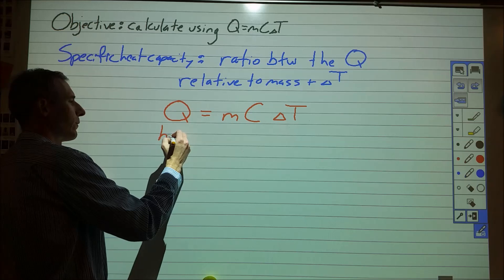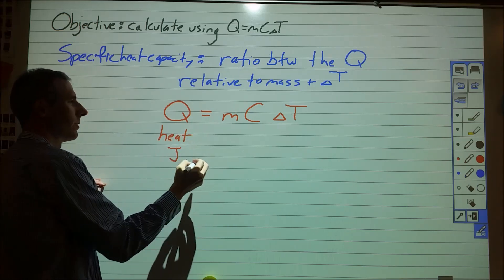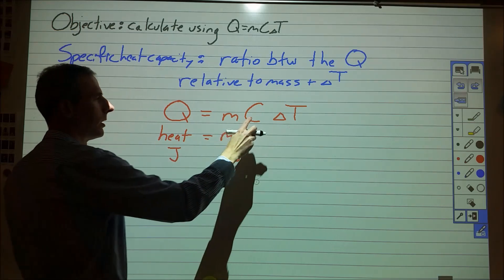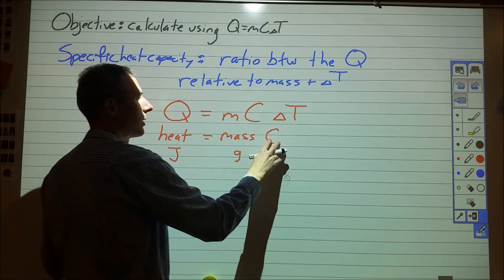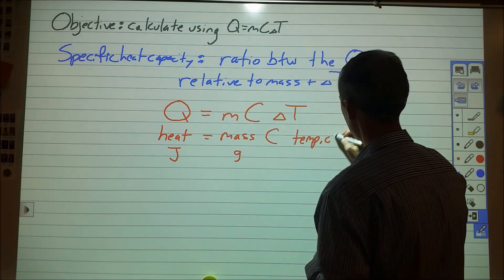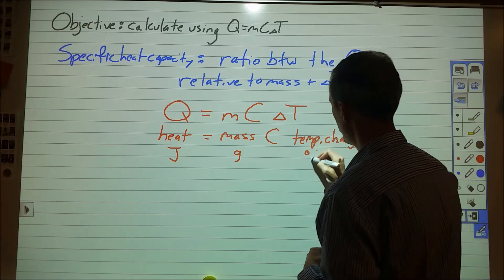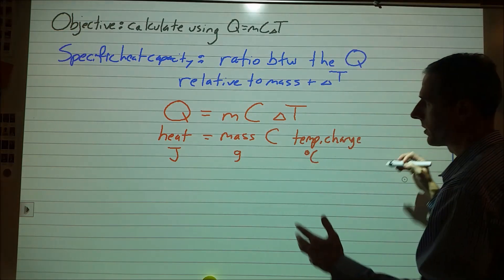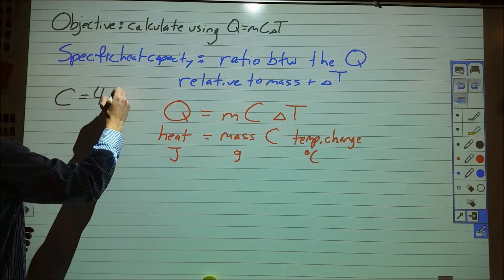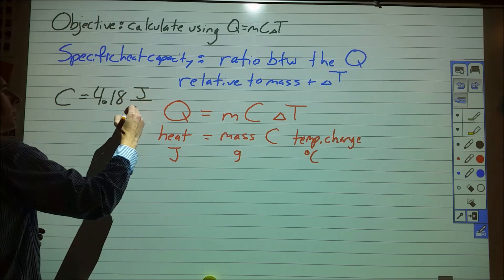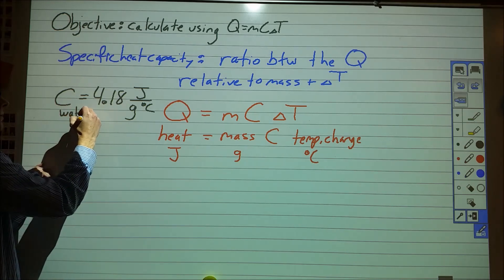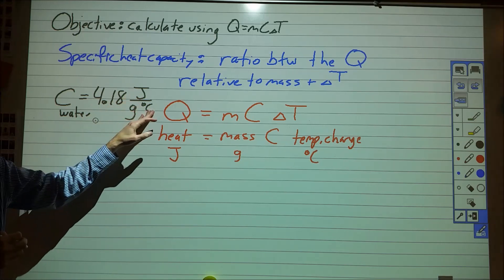In this equation, Q stands for heat, the units of which are joules, and that heat is equal to the mass — which is typically in grams — times the specific heat capacity, times the temperature change, which is in degrees Celsius. So when I look at what specific heat capacity is, it is some value that relates the number of joules applied to the grams and the temperature change. For instance, for water, specific heat capacity is 4.18 joules per gram per degree Celsius.